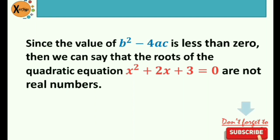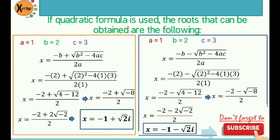We can check this by determining the roots using the quadratic formula. After identifying a, b, and c, I substitute into the formula, separating signs for the two roots. Our first root is negative 1 plus square root of 2i, and our second root is negative 1 minus square root of 2i. Both roots are imaginary because of the presence of i. So when the discriminant is less than 0, the roots are automatically imaginary — meaning no real roots.